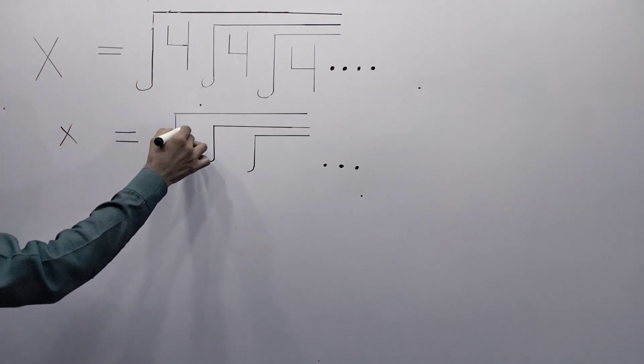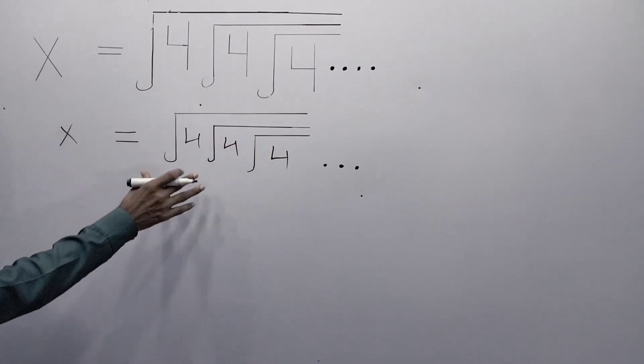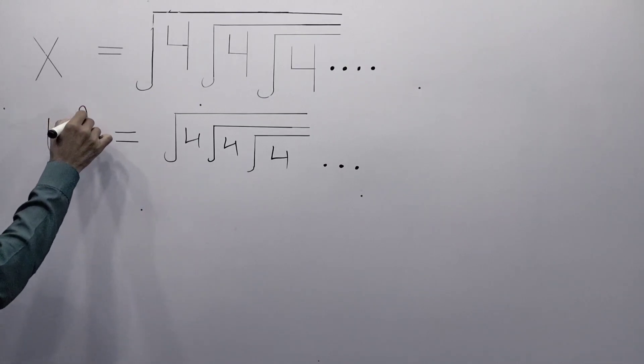Here x equals square root of 4, square root of 4, and again square root of 4. To solve this type of equation, first of all, we have to take the square on both sides.